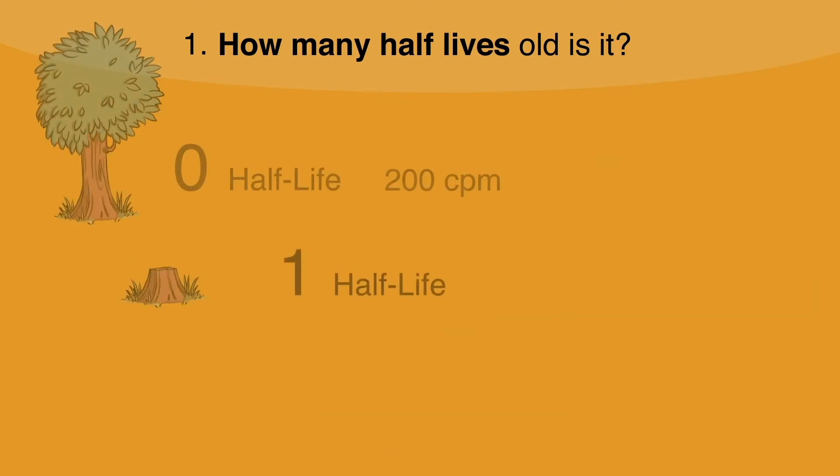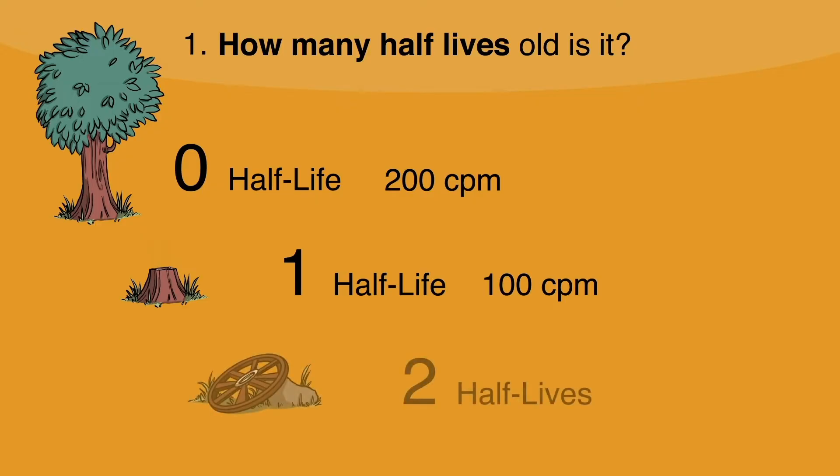Then after one half-life, it would reduce to 100. And then after two half-lives, it would reduce down to 50, which is exactly the count rate of the wheel. So we know that that wheel must be two half-lives old.